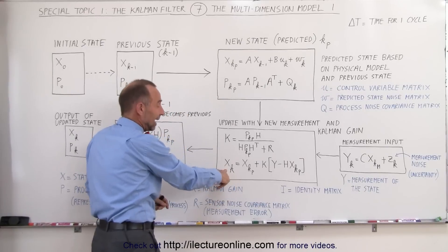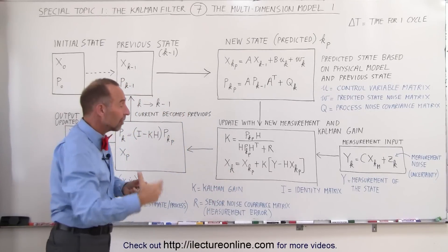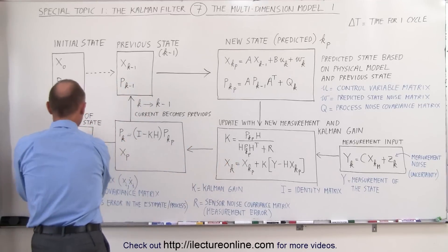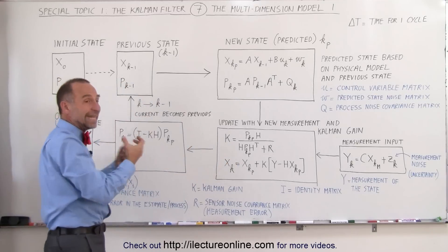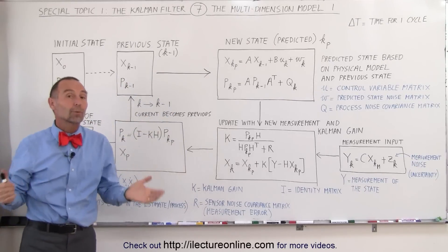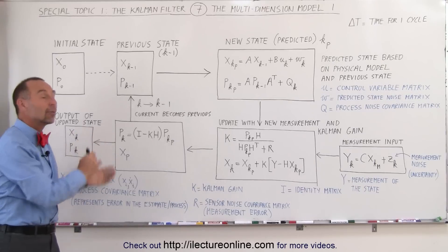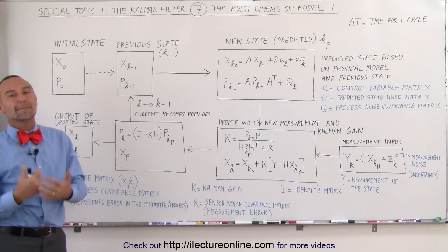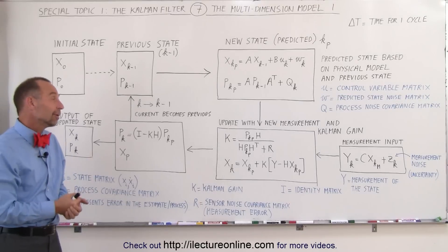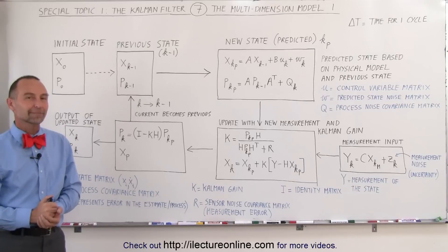We then update the state — the position and velocity of the object in one, two, or three dimensions — feed that to the output wherever needed, and start the whole process over again. That's what we call Kalman filtering, and that's how we're going to do it using matrices. Stay tuned and we'll have more videos explaining how we actually use that.